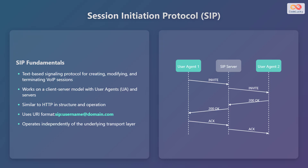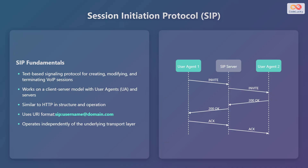SIP uses a Uniform Resource Identifier (URI) format similar to email addresses — such as sip:username@domain.com — to identify users and devices. It operates independently of the transport layer, allowing it to run over UDP or TCP. User Agent 1 and User Agent 2 communicate through a SIP server to establish, maintain, and terminate calls. Invite messages initiate calls, 200 OK messages confirm connections, and ACK messages finalize the setup.